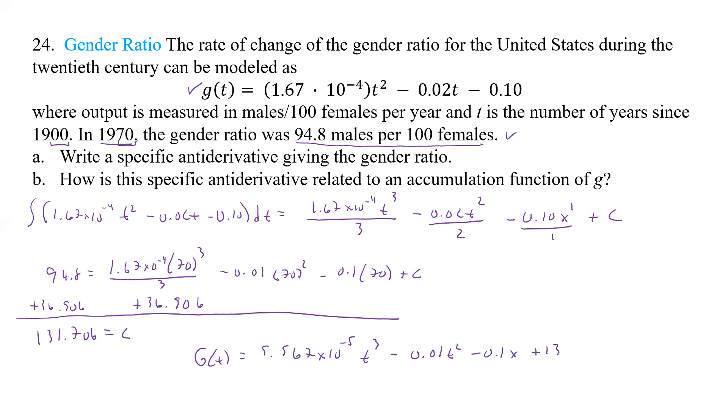That was a minus 0.01 t squared minus 0.1 x, and then plus 131.706. And that's going to be units, it's going to be males per 100 females.